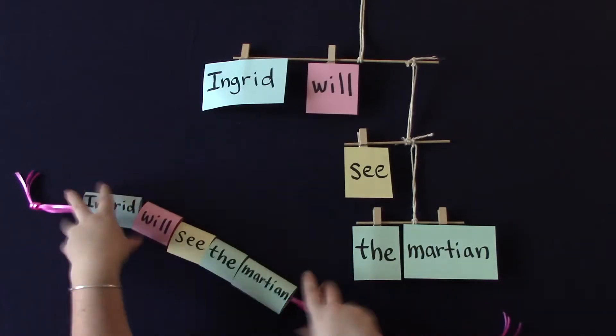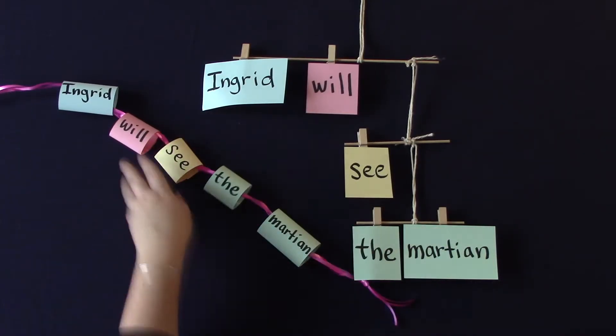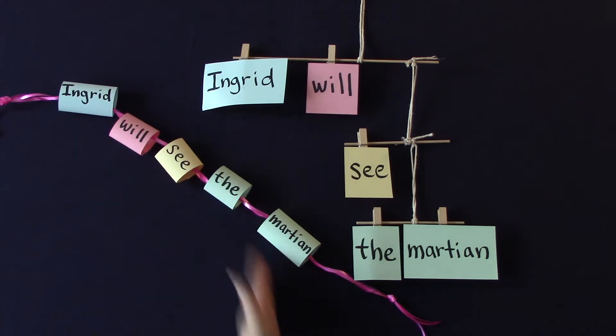How could we figure out whether sentences are more like a bracelet or a mobile? That is, is it just a linear order that's important? Or are there subgroups that are important too?